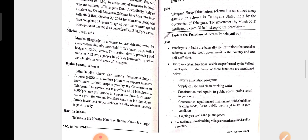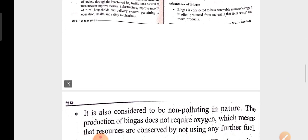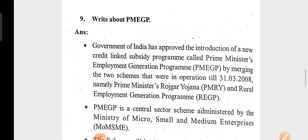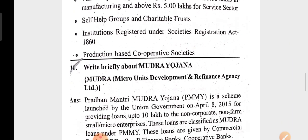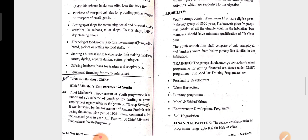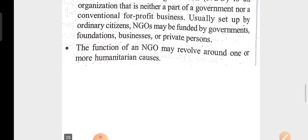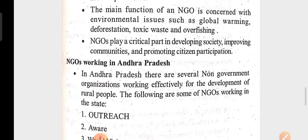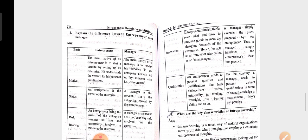Explain the functions of the Gram Panchayati Raj. Explain the role of village panchayats in rural development. What is biogas? What are the advantages of biogas? Write about PM EGB — Prime Minister's Employment Generation Program. Write briefly about Mudra Yojana. Explain briefly about the Chief Minister's Empowerment of Youth. Explain the functions of NGOs — non-governmental organizations. Explain the characteristics of Entrepreneurship. Explain the difference between Entrepreneurs and Manager. What are the three characteristics of Entrepreneurship?